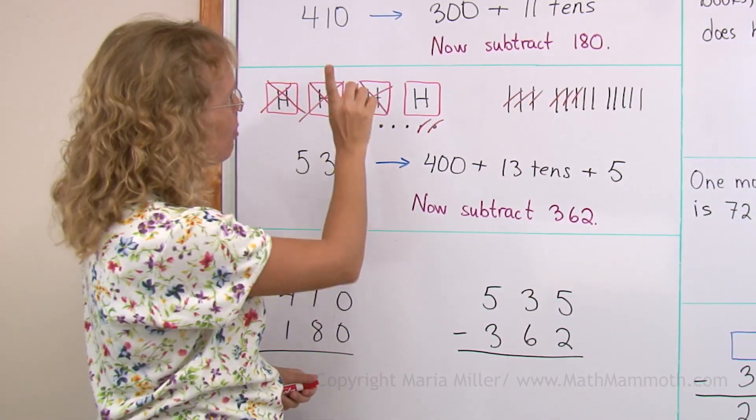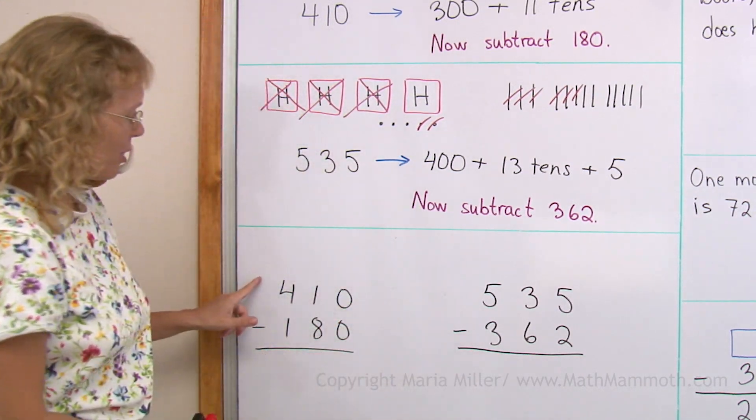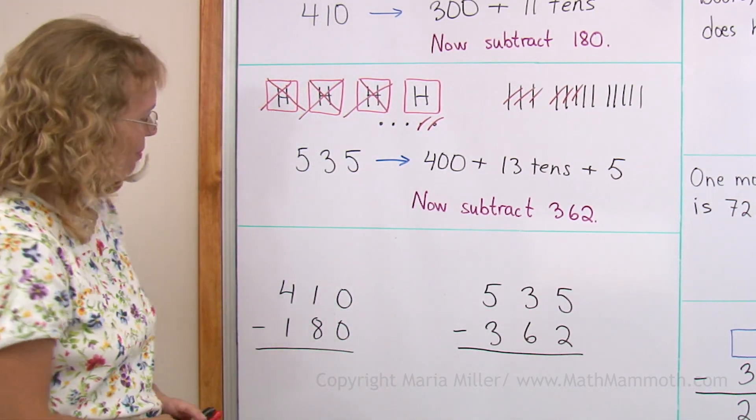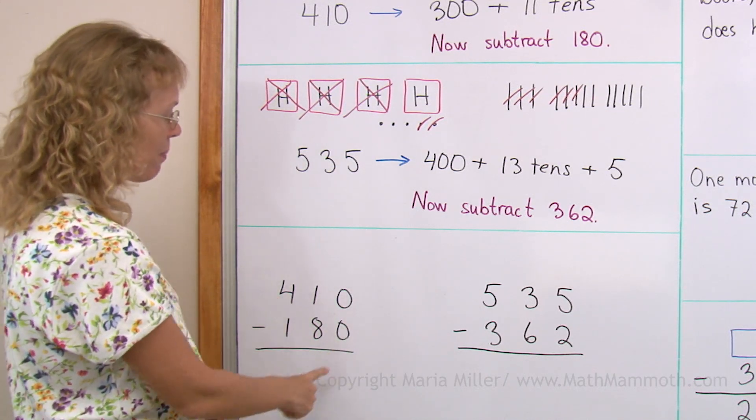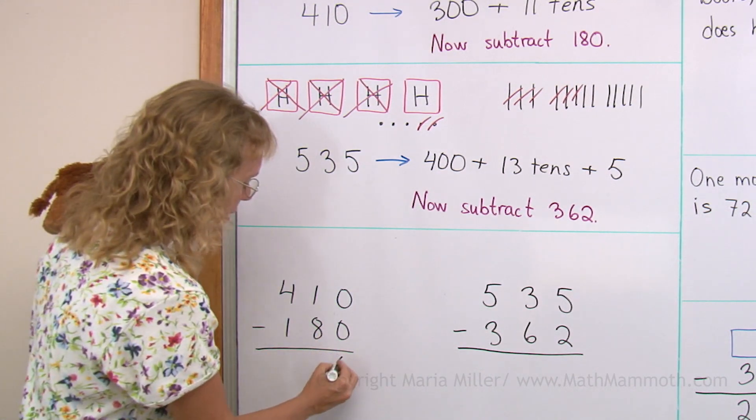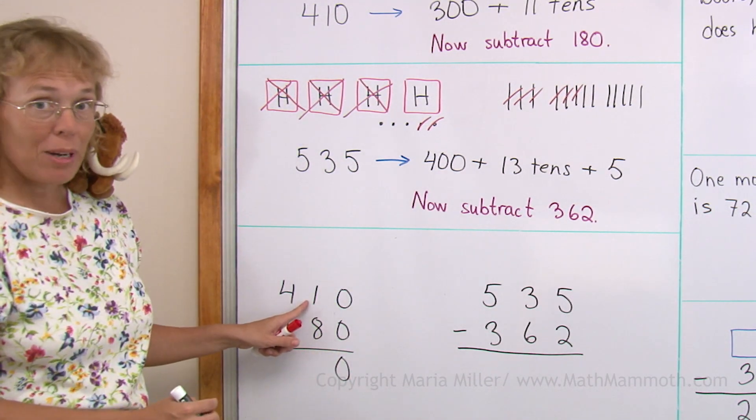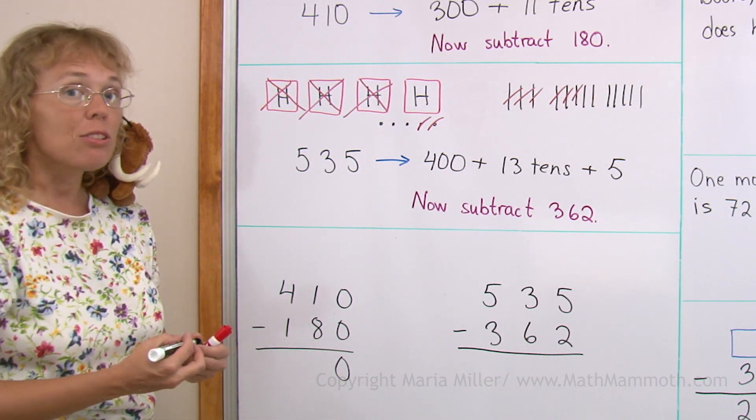Now let's do those same two problems over here. The usual way. Where the numbers are written under each other. Okay? Four hundred ten minus one hundred and eighty. So here I subtract zero minus zero and that's pretty easy. But now here's the problem. One ten minus eight tens. I cannot subtract that. I need to regroup first.